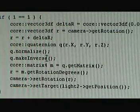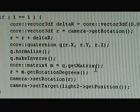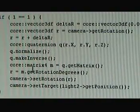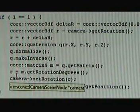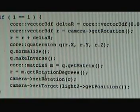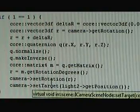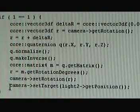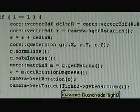It's making an inverse and getting the matrix back to a matrix object, then converting it back to rotation degrees, setting the camera rotation, and pointing it to the light target.